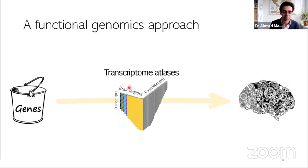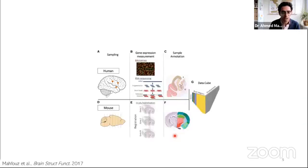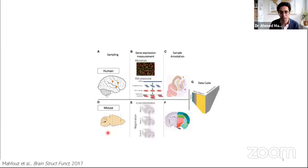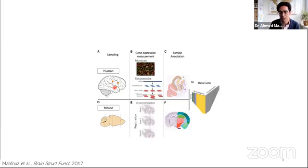For that, we make use of transcriptome atlases — atlases with a large amount of measurements of every gene and every transcript across different brain regions and different developmental stages. The largest resources of this type come from the Allen Institute for Brain Sciences in Seattle, which started in 2003. They began by building atlases of gene expression across the brain — first the mouse brain. You take the mouse brain, cut sections, stain them using in situ hybridization for the expression of one gene, then collect these sections back into a 3D volume, coupled with very detailed anatomical annotation. A similar approach has been used in human data.